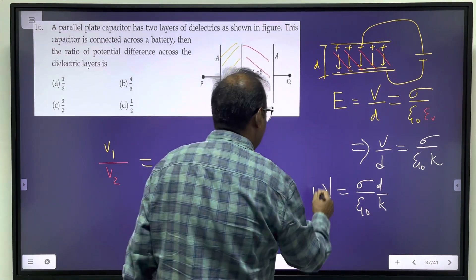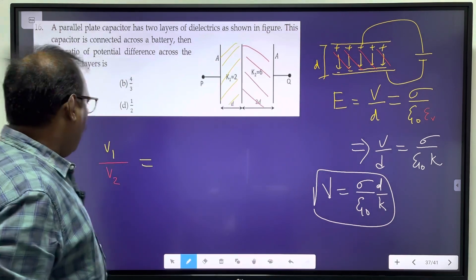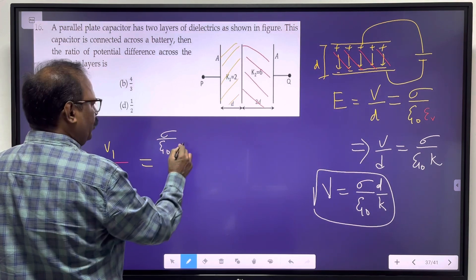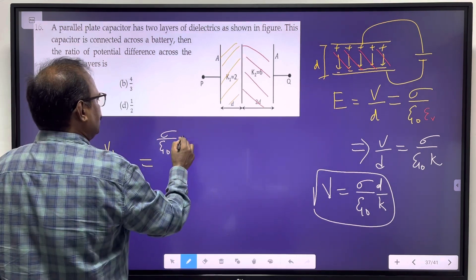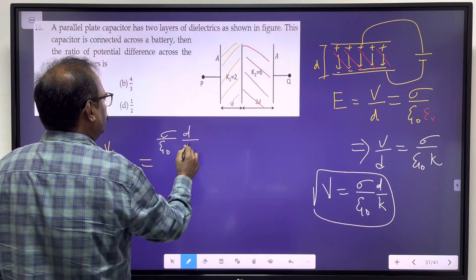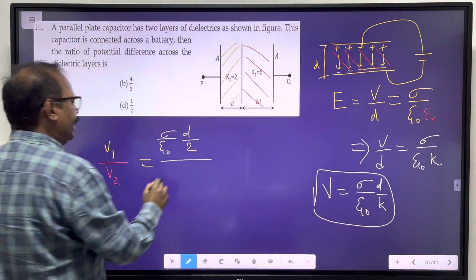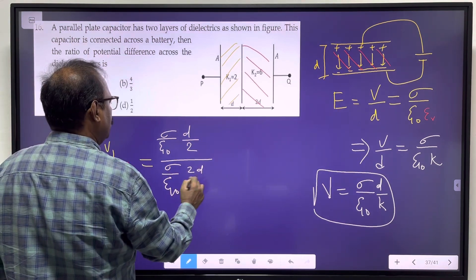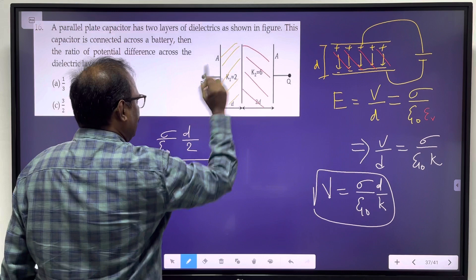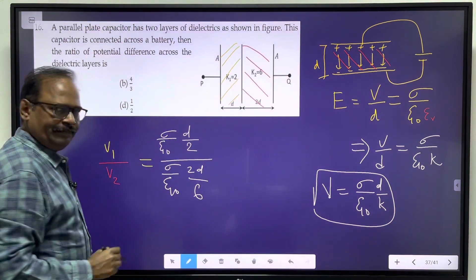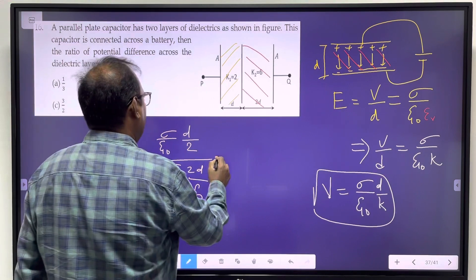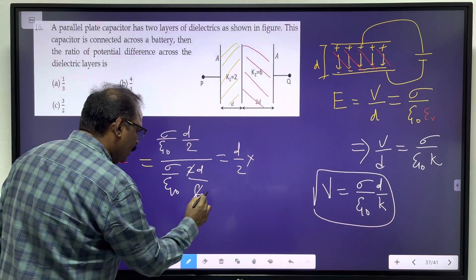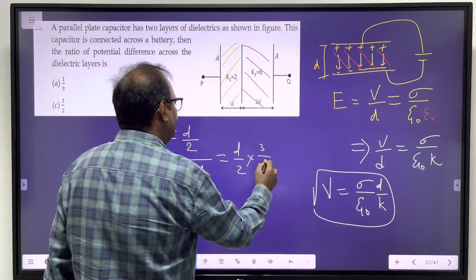For the first one, sigma by epsilon 0 will cancel. This distance is D, K is 2. For the second, sigma by epsilon 0, the distance is 2D divided by K which is 6. If we cancel, we get D by 2 over 2D by 6, which equals 3 by 2.